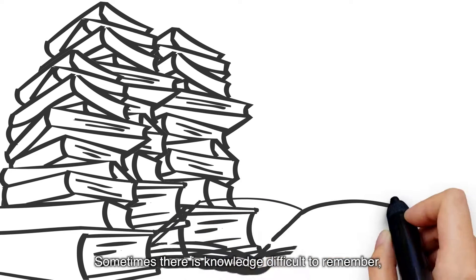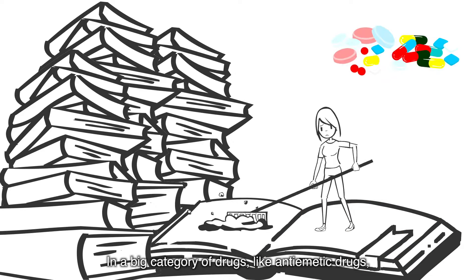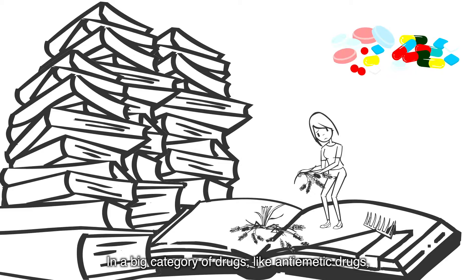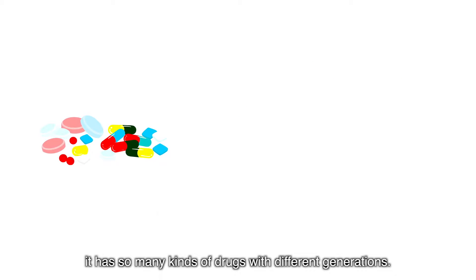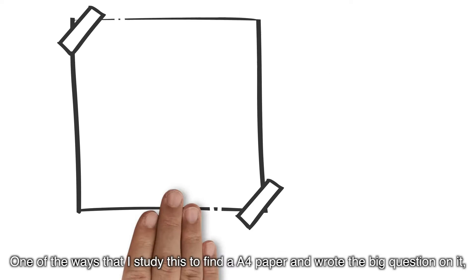Sometimes there is knowledge difficult to remember. For example, pharmacy has a big category of drugs like anti-emetic drugs. There are so many kinds of drugs with different generations. Different generations have different principles, structures, and side effects.